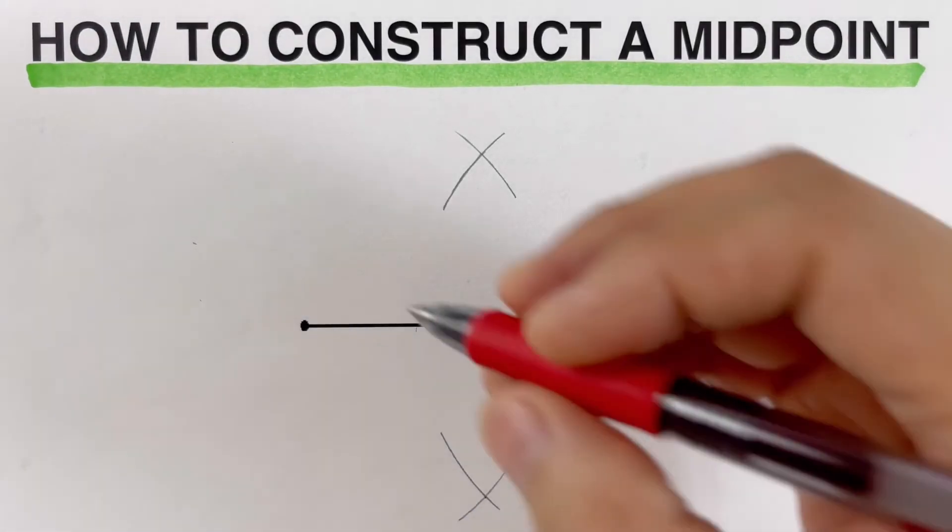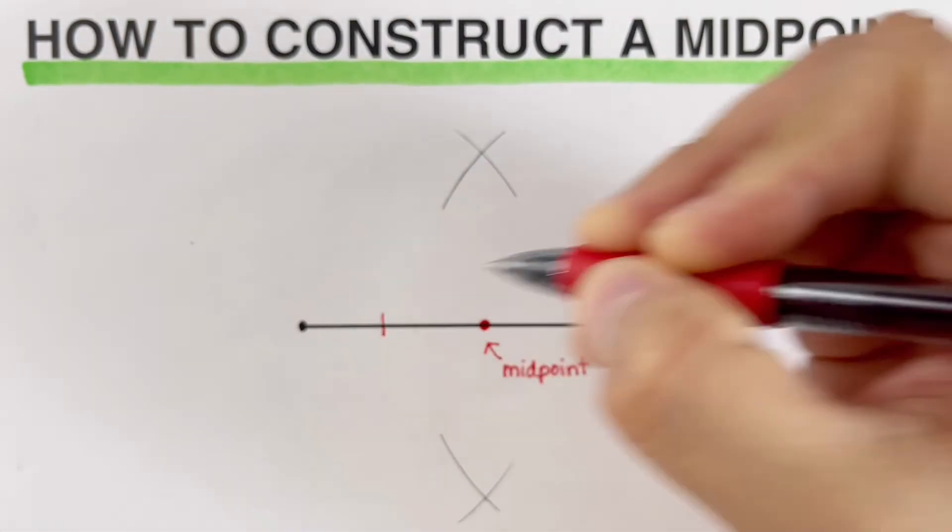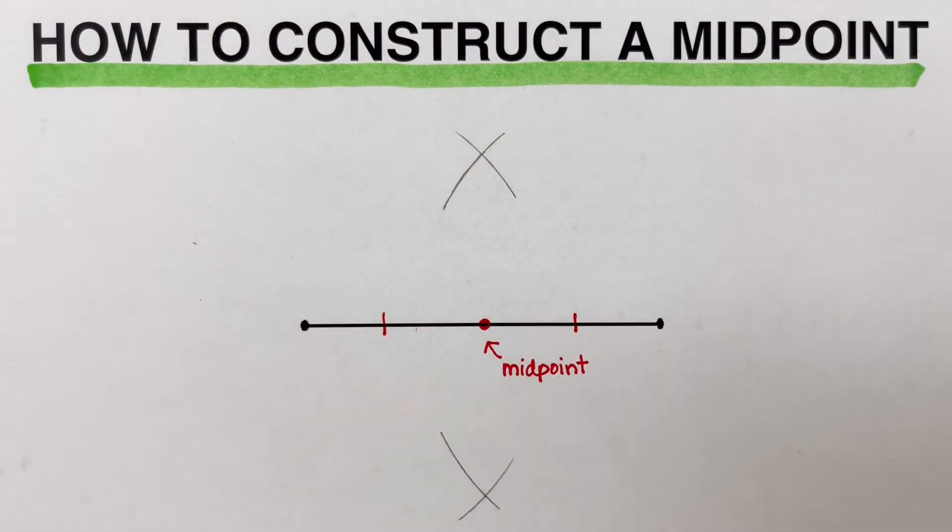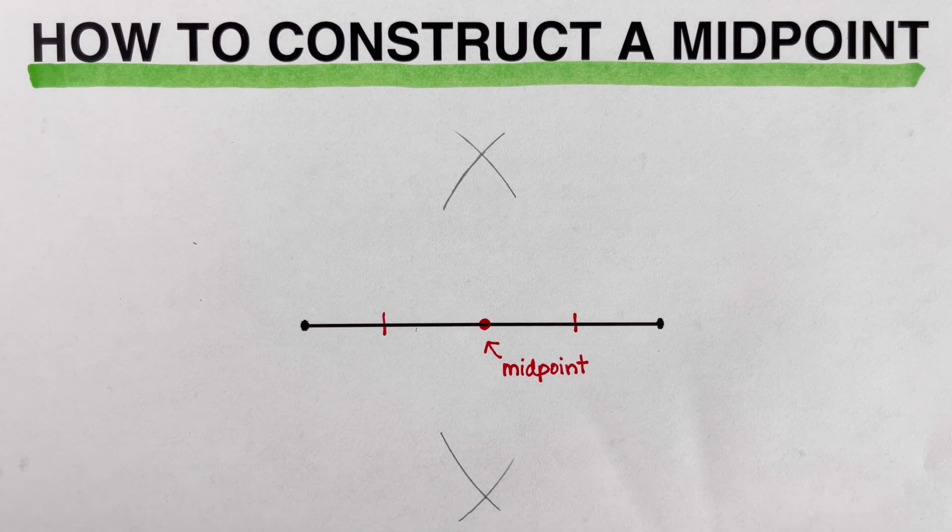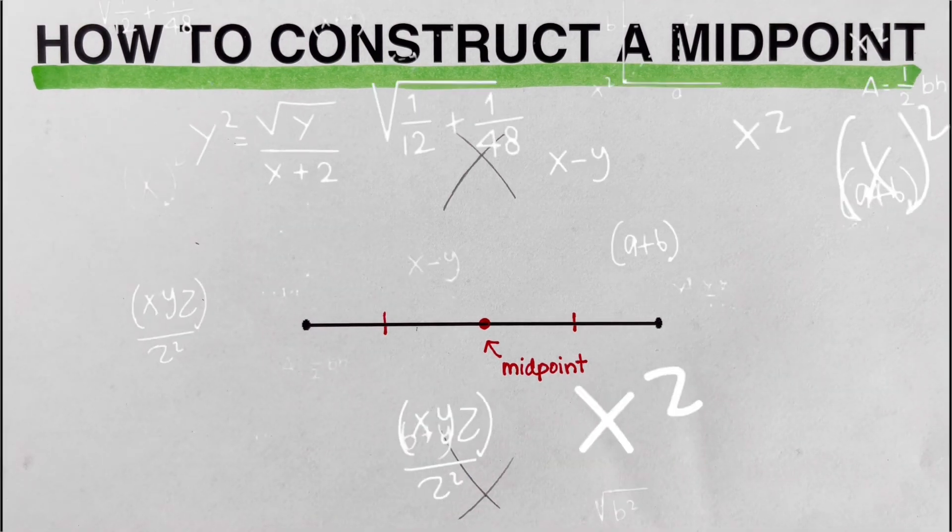So I'm going to label these two line segments as congruent to each other. And that is how we construct a midpoint using compass and straight edge. In this case that we have here, we're using a ruler. That's it.